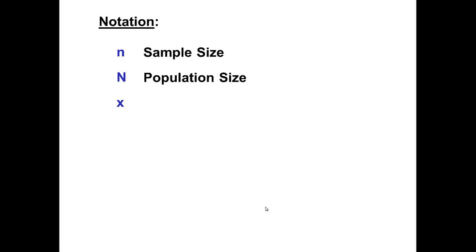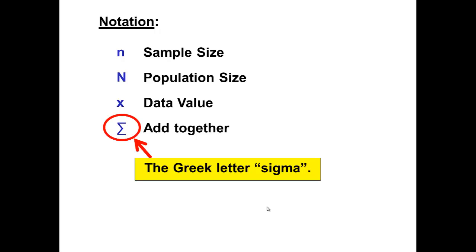X is a single data value and will represent each data value in turn. Next we have this funny-looking symbol. It means to add together. It's actually the Greek letter Sigma. A lot of our statistic notations are Greek letters.